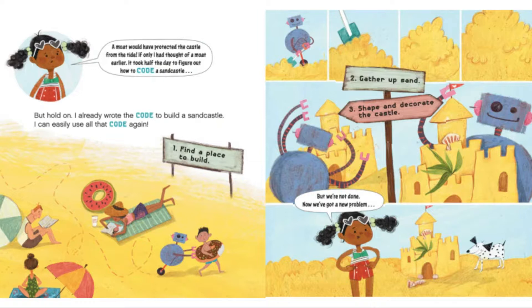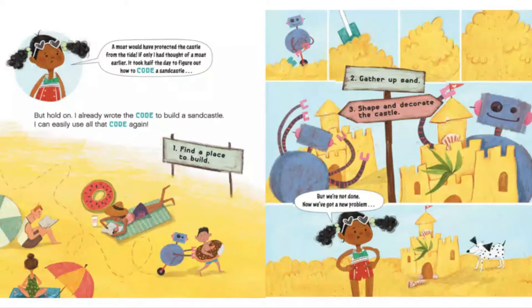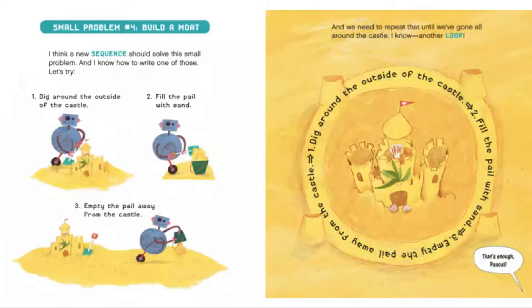It took half the day to figure out how to code a sandcastle. But hold on! I already wrote the code to build a sandcastle — I can easily use all that code again. One: find a place to build. Two: gather up sand. Three: shape and decorate the castle. But we're not done — now we've got a new problem. Small problem number four: build a moat.